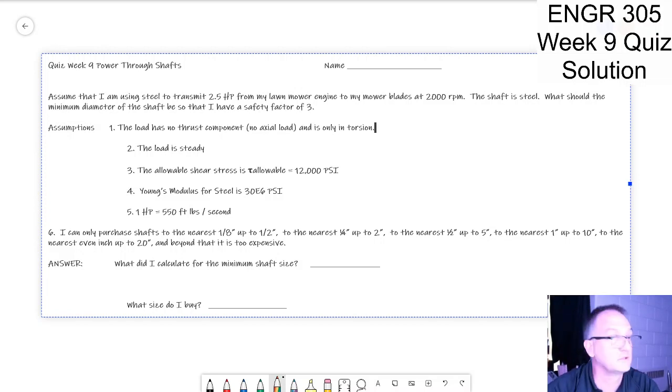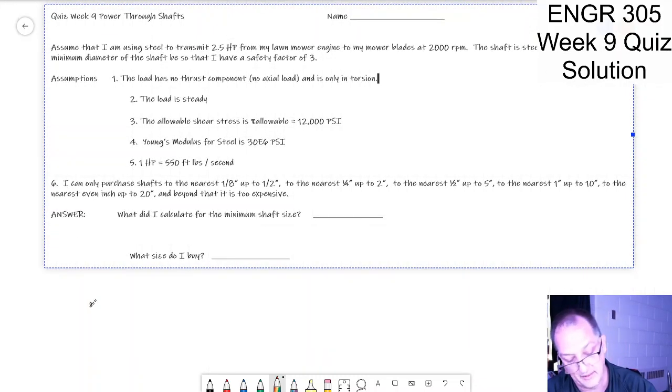Engineering 305 week 9 quiz solution. Some of you in class asked for it, you get it. Assuming that I'm using steel to transmit two and a half horsepower from my lawn mower engine to my mower blades at 2,000 rpm, there's a lot of key information right there. I've got the power.